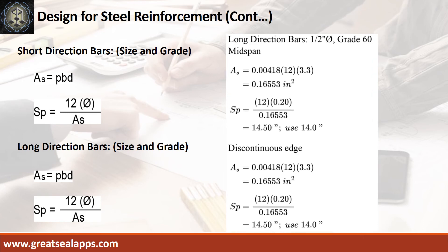At long direction, for both mid-span and discontinuous edge with rho equals 0.00418, b equals 12 inches, and d equals 3.3 inches, the area of steel is 0.16553 square inches, and the spacing for 1/2-inch diameter bar is 14 inches.